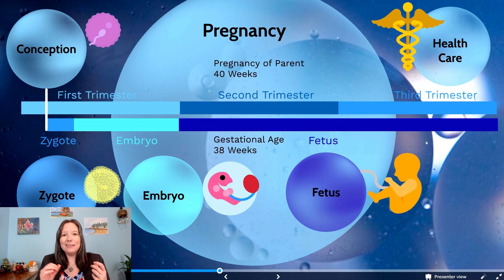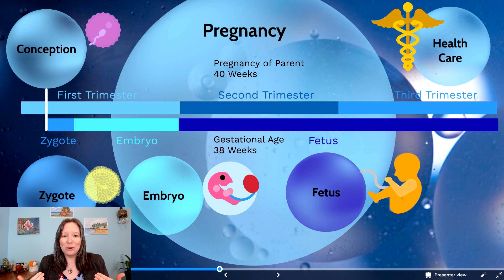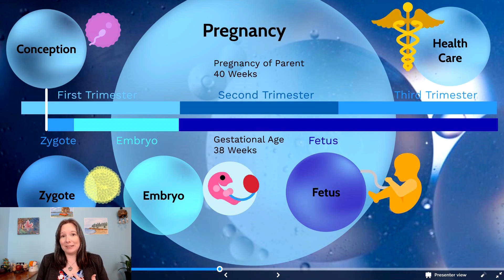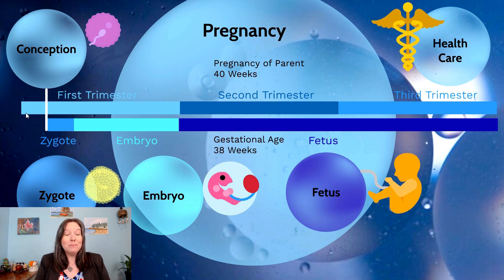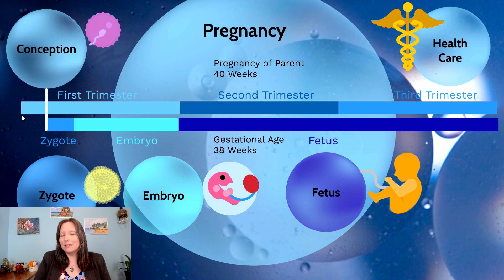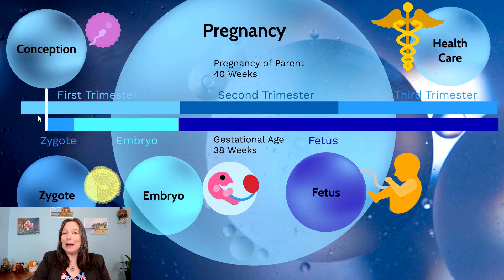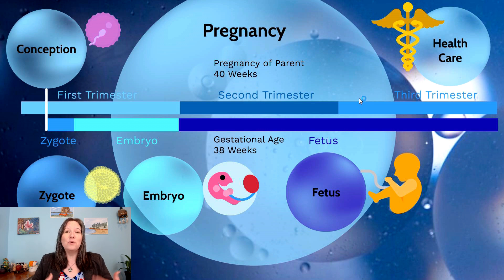When we talk about pregnancy, it's important to get over some language hurdles. We talk about the pregnant parent carrying for 40 weeks because we count the start of pregnancy from before conception even occurred — starting from the parent's last menstrual cycle. We add two weeks before fertilization and conception hypothetically occurred, making it 40 weeks total, divided into three segments known as trimesters.